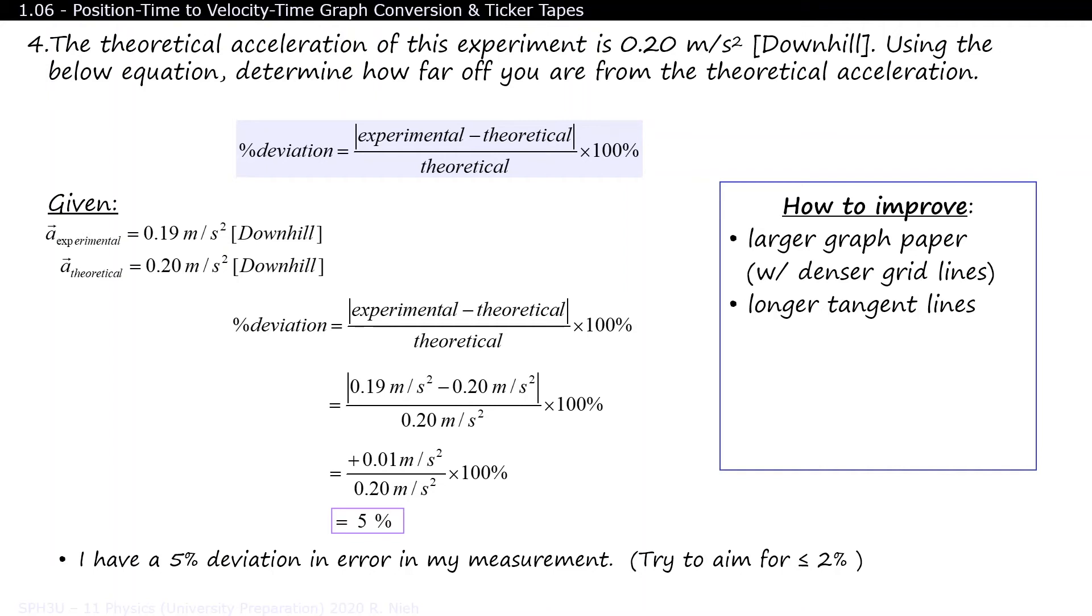You can improve your curves procedurally by using a thinner pencil lead. Try drawing the curve upside down, as your hand naturally arcs this way. And most important of all, practice. Aim for a percentage deviation that's 2% or less.